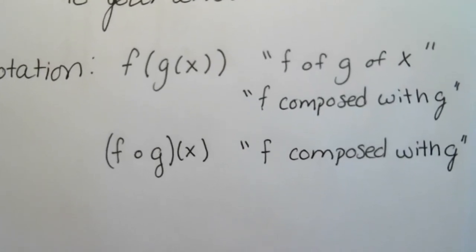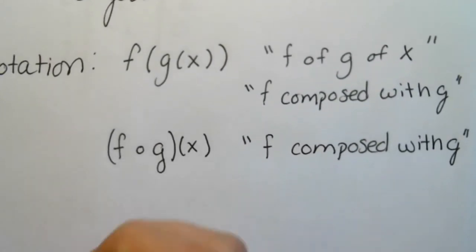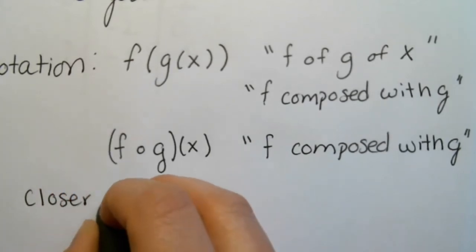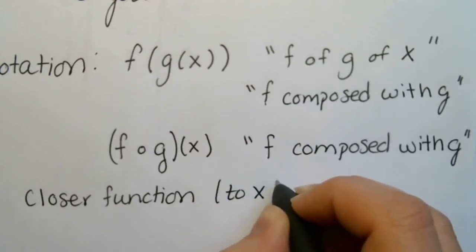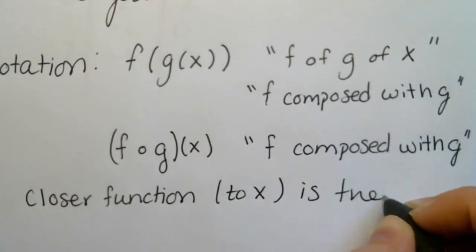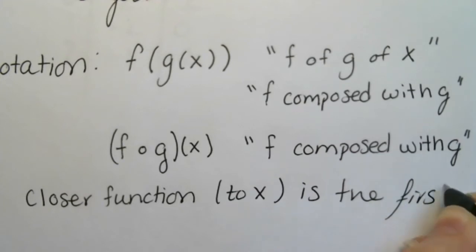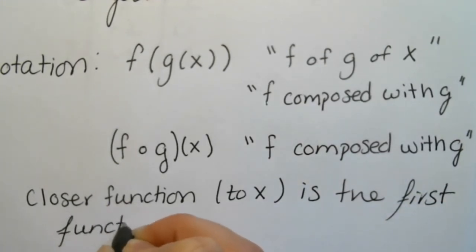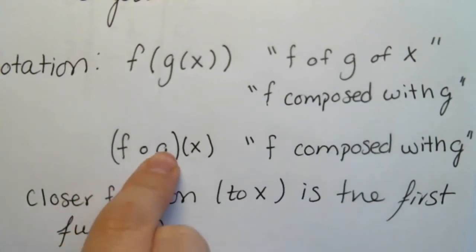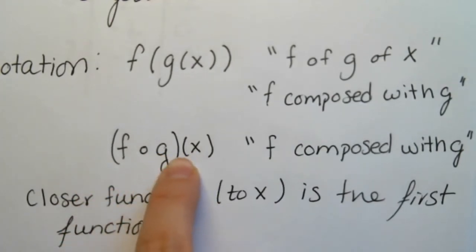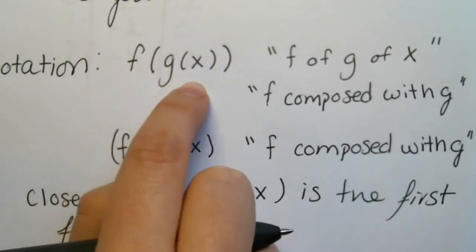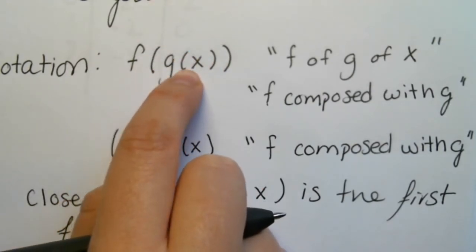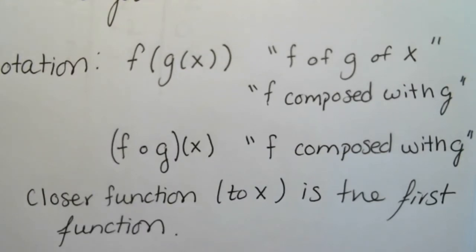The function that is closer to x goes first. That works for both types of notation. In f(g(x)), g of x is closer, so we first apply g of x, then apply f of x. The same rule applies with the circle notation — the function closest to x is applied first, then the second function.